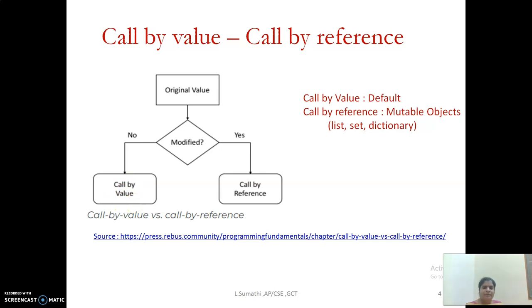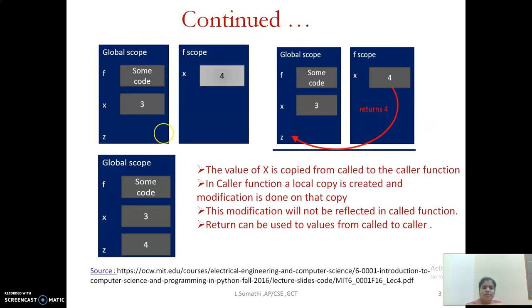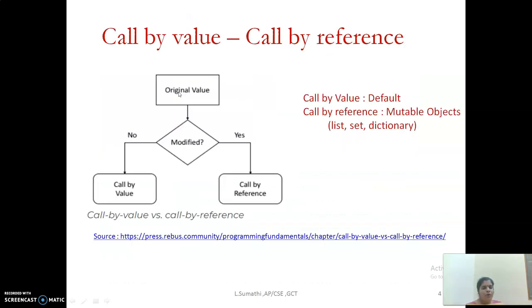In the example what we have seen, it is of call by value type because the original value is not being modified. Only a copy is made and then the modification has been done. So it is an example of call by value, and in general, by default, Python follows call by value. Call by reference is used for mutable objects like list, set, and dictionary. When you pass list, set, and dictionary as argument, you can enjoy the benefit of call by reference. Thank you.